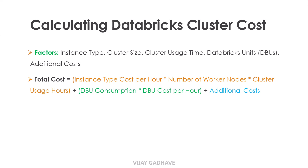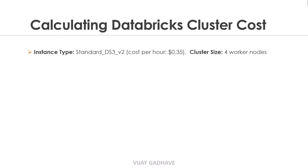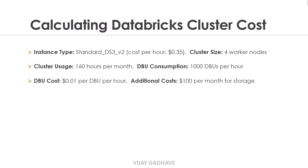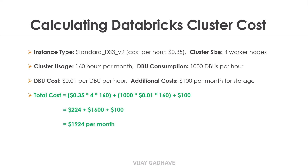Let us understand this with an example. Suppose we are using instance type Standard DS3V2 costing $0.35 per hour, cluster size of 4 worker nodes, cluster usage of 160 hours per month, DBU consumption of 1000 DBUs per hour, DBU cost of $0.01 per DBU per hour, and additional cost of $100 per month for storage. The total calculated cost comes to $1,924 per month.